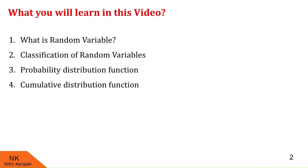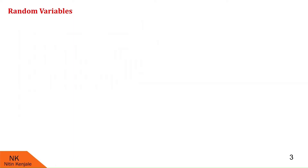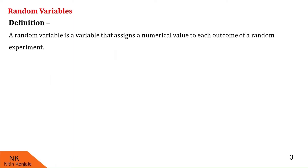So let us proceed with the question: what is a random variable? Here we will see the formal definition of a random variable. A random variable is a variable that assigns a numerical value to each outcome of a random experiment. Let me explain this definition with the help of an example.